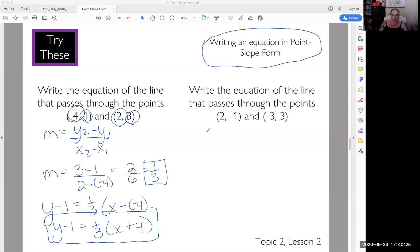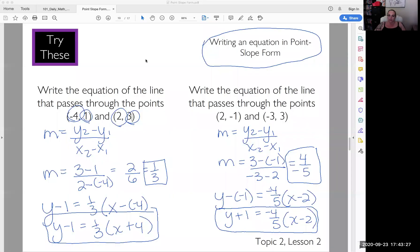So follow these steps and try it here. And then pause the video first and then come back and check your answer. So if you ended up with y plus 1 equals negative 4 fifths for the slope times x minus 2, give yourself a super sweet high-five.